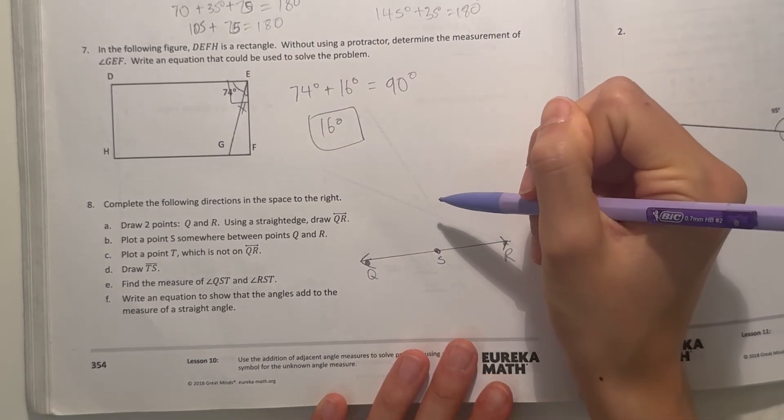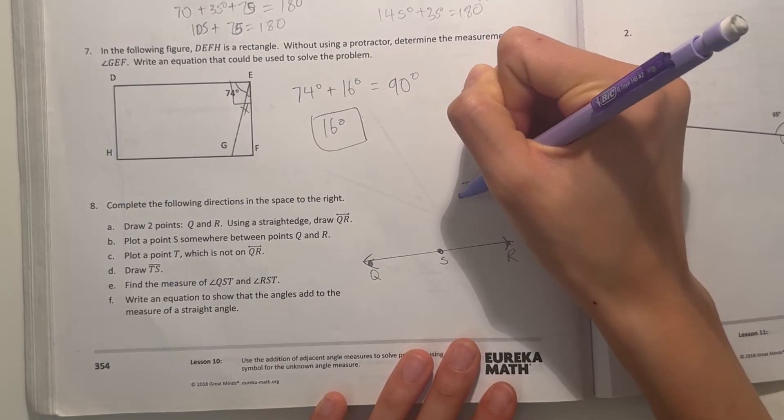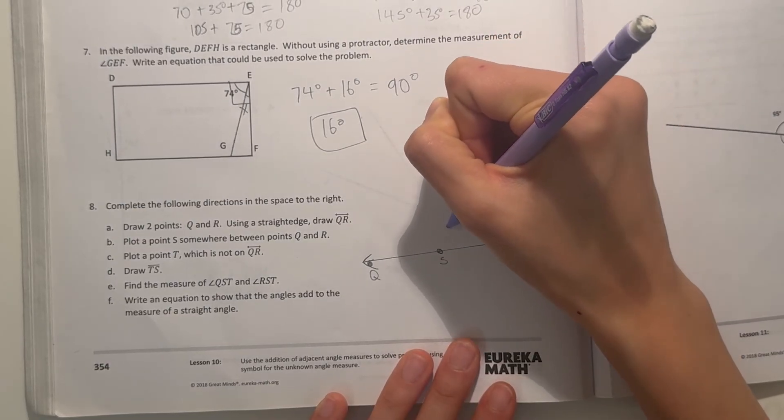Plot point T which is not on QR. T right here. Draw TS. So connect it.